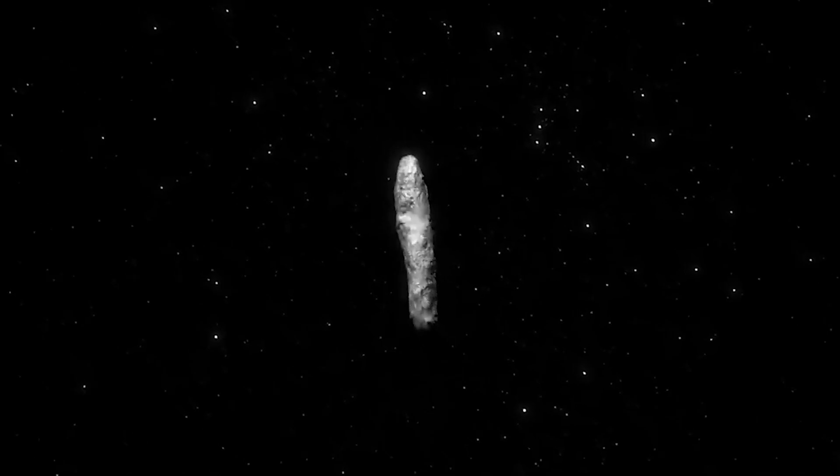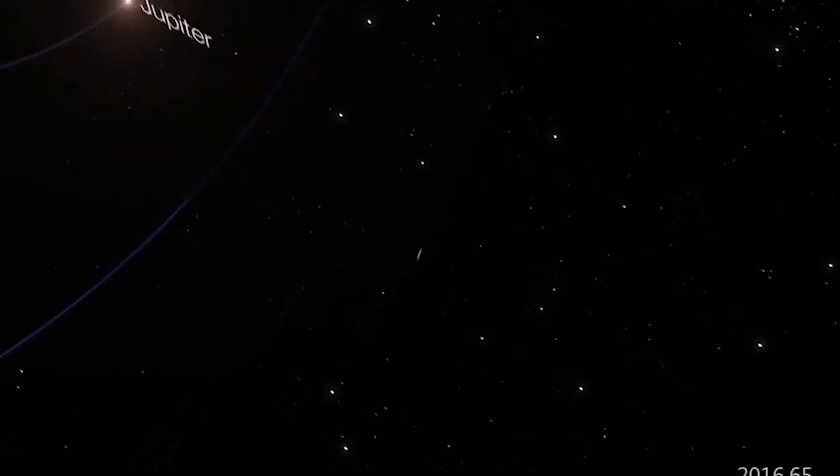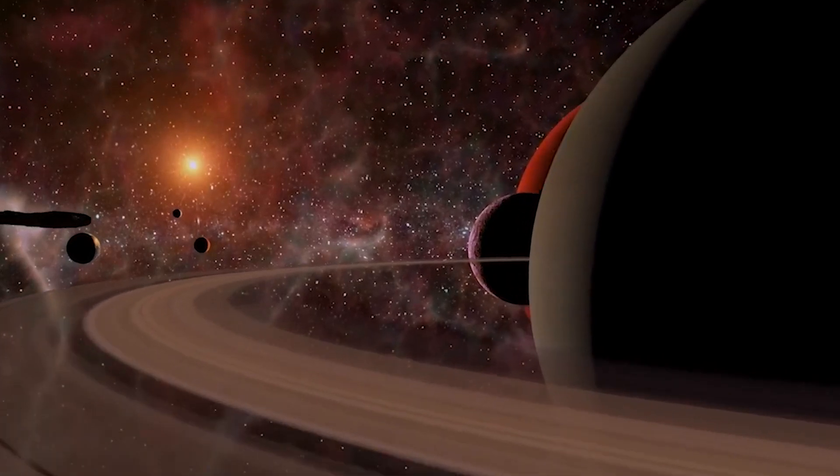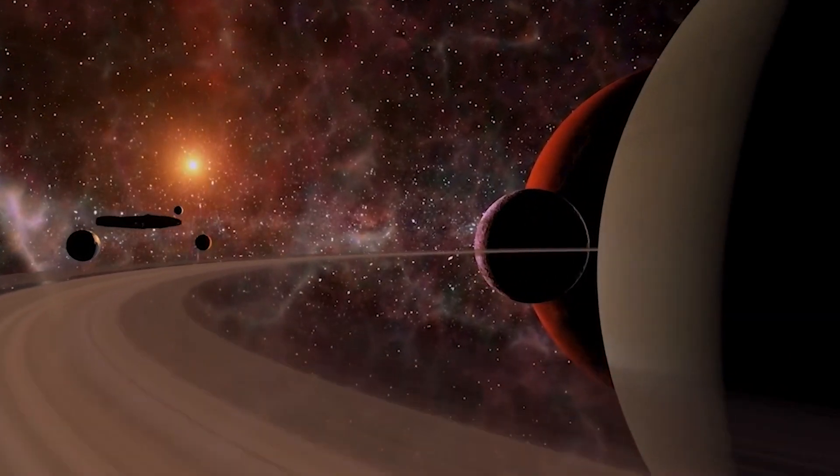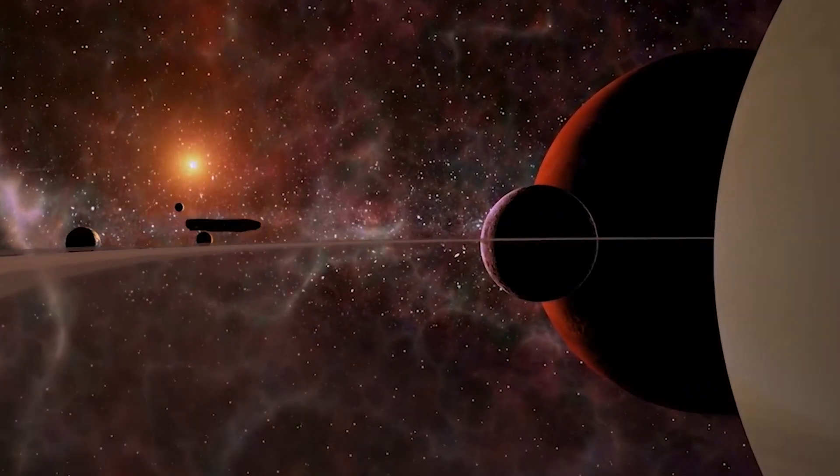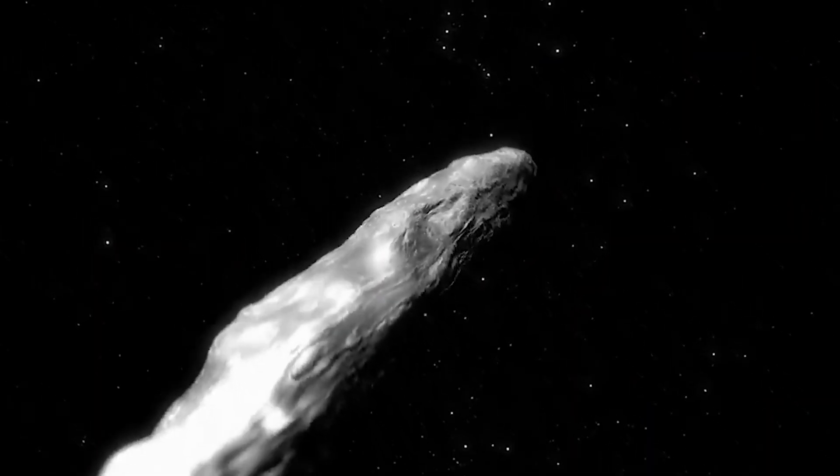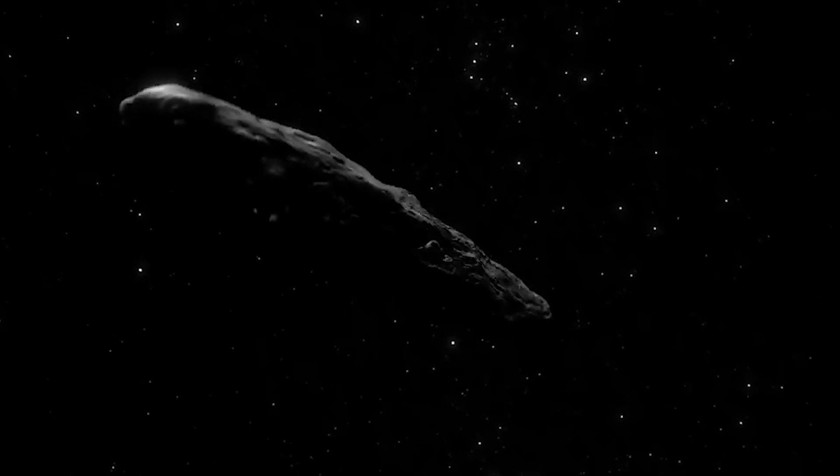During the observations of Oumuamua, researchers found that it was moving in a so-called hyperbolic orbit, similar to a boomerang. It was thanks to this that scientists were able to establish for sure that the object did not come from our solar system, but only flew in the neighborhood and would never be seen again.